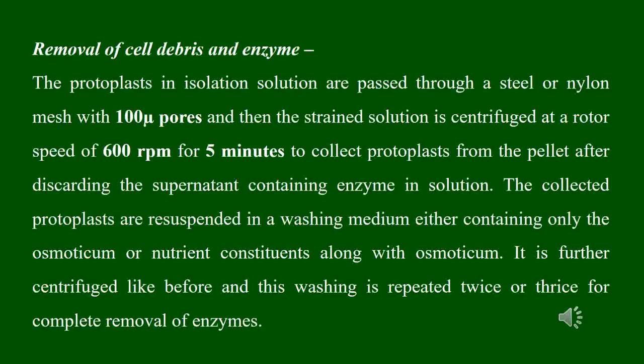In the first step of purification, the protoplasts in the enzyme solution are passed through a mesh made of steel or nylon with a pore size of around 100 microns. After straining, the solution is centrifuged at 600 rpm for 5 minutes. The protoplasts are collected as a pellet and the supernatant containing enzyme and cell debris is discarded.